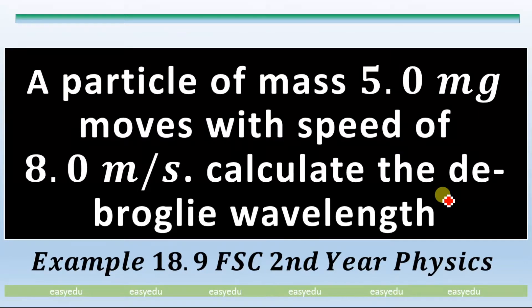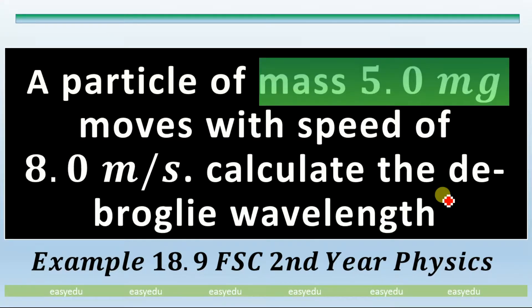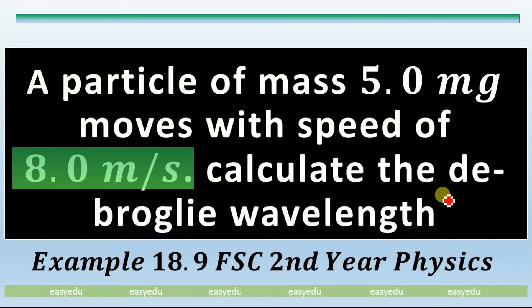Using the de Broglie hypothesis, we will determine the de Broglie wavelength of a particle that has a mass of 5.0 mg and is moving with 8.0 m per second.